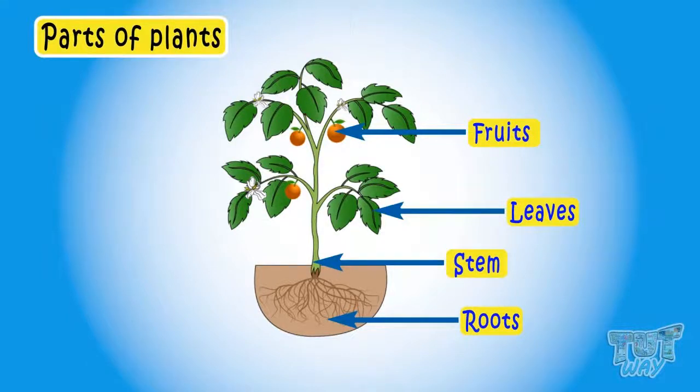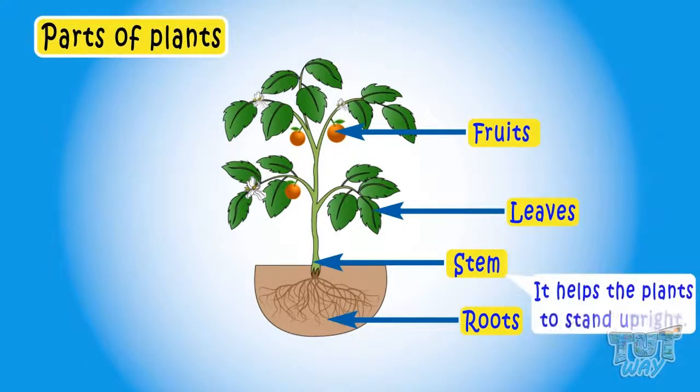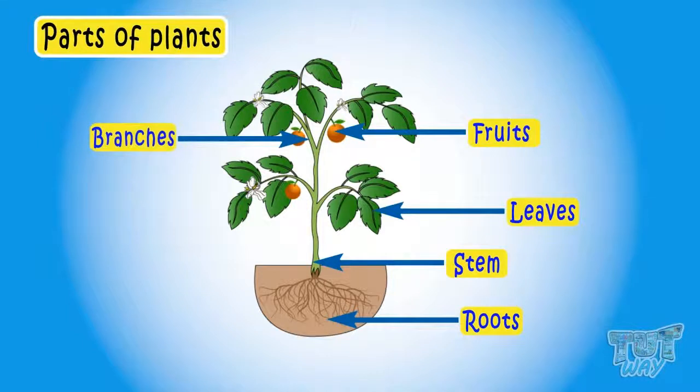This is the stem of the plant. It helps the plant stand upright and transports the water and minerals to every part of the plant. These are branches of the plants. These are flowers. Flowers produce seeds for the plants.